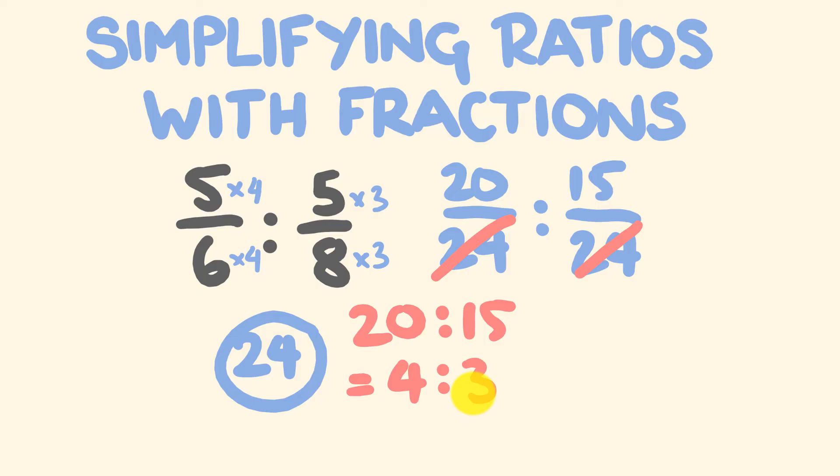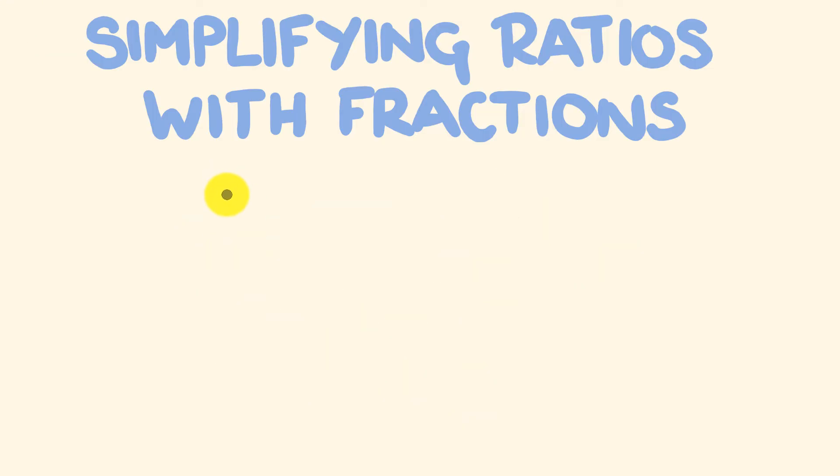What about we do one more of these? In fact, let's make this one a little bit trickier. This is going to be 1 is to 1 and 3 fifths. So I want to simplify this here. How do we go about doing this? The first thing I'm going to do is get this fraction here and turn it into an improper fraction.